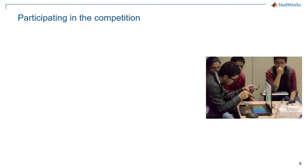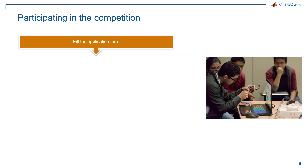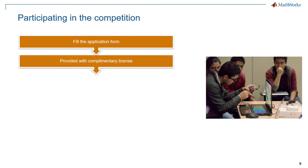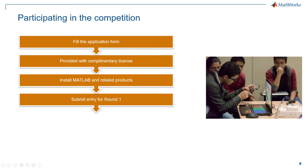So if I am a participant of the MathWorks Mini Drone competition and I have a team of two to four people, what will be the workflow I would have to follow? First, you will have to select the competition you want to be a part of and check if it is an in-person or virtual competition. You will then have to fill out an application form for that specific competition. Once done, the team captain will receive a complimentary license from MathWorks to work on the problem statement, and the team captain can share this license with their team members. Then we will install MATLAB, Simulink and the necessary products on the system and work on the problem statement to submit our solution for the simulation round, which is round one.